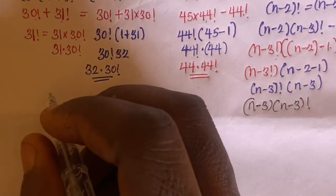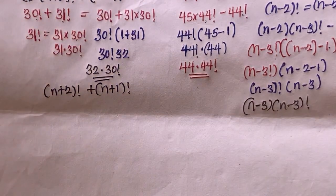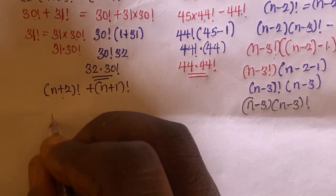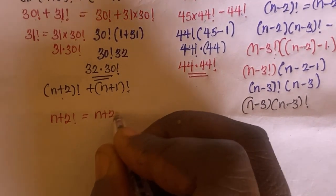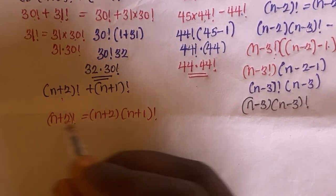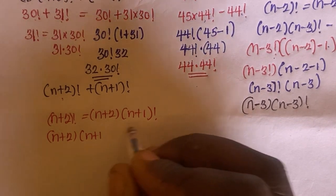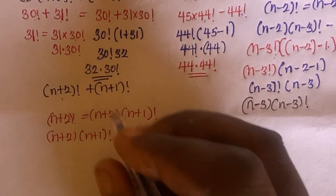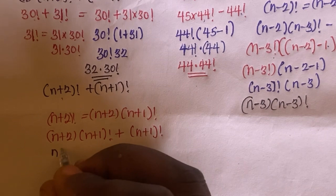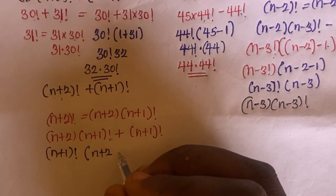The last question is (n plus 2) factorial plus (n plus 1) factorial. Since n plus 2 is the higher integer, we express (n plus 2) factorial as (n plus 2) times (n plus 1) factorial. Replacing that in the expression, we get (n plus 2) times (n plus 1) factorial, plus (n plus 1) factorial. We can factorize out (n plus 1) factorial, giving (n plus 1) factorial times (n plus 2 plus 1).